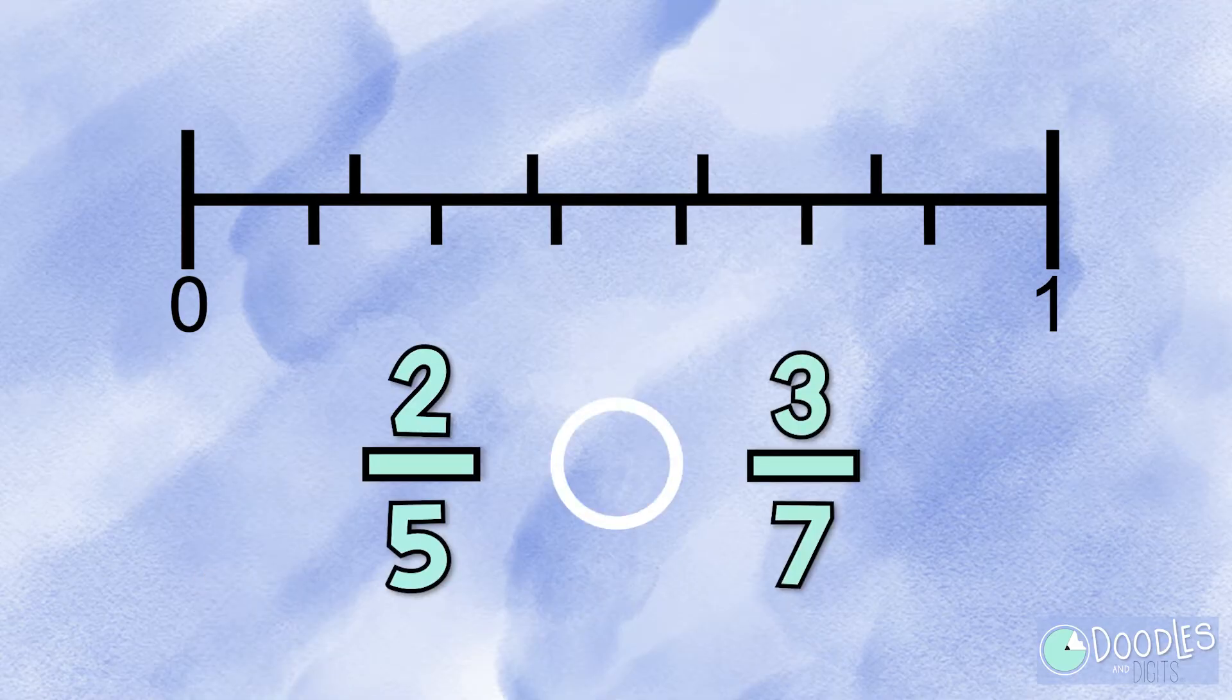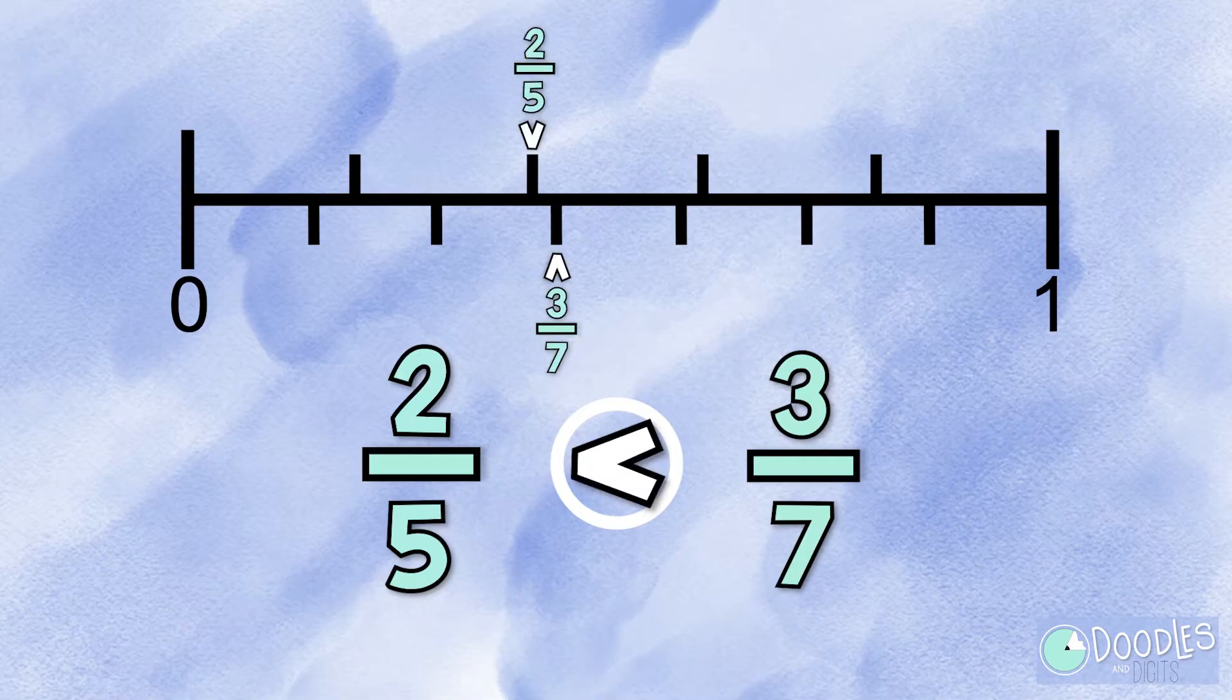Two-fifths and three-sevenths. Two-fifths is less than three-sevenths.